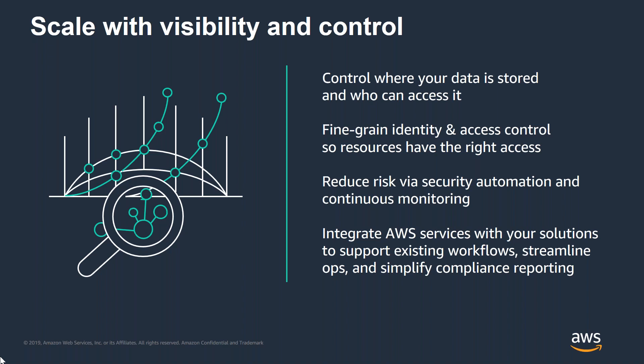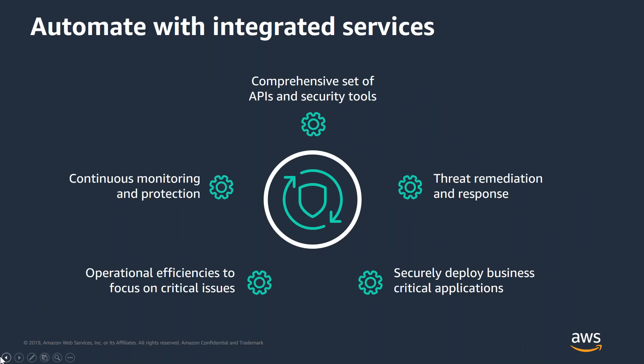Reduce risk as you scale by using security automation and activity monitoring services to detect suspicious security events — like configuration changes — across your ecosystem. You can integrate our services with partner solutions to support existing workflows, streamline your operations, and simplify compliance reporting. You can integrate your security tasks on AWS and enable your team to be more secure by reducing human configuration errors, giving your team more time to focus on the work critical to your business. Select from a wide variety of deeply integrated solutions that can be combined to automate tasks in novel ways.